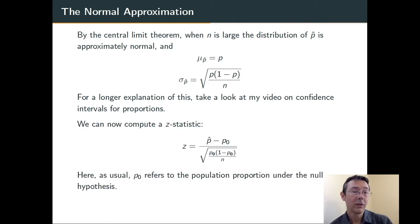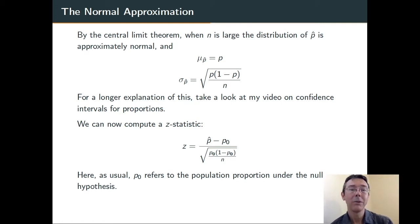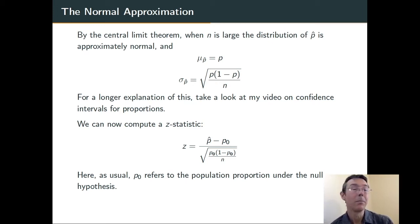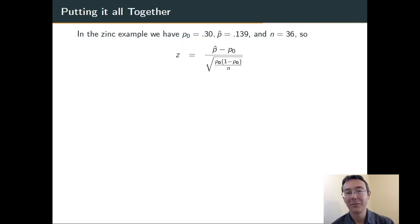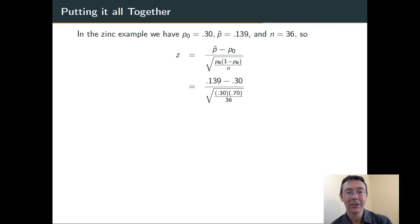So, once we know that we have a bell-shaped curve, we have a mean and a standard deviation, we can compute a z-score. We take the value we got minus the one we expected — p-hat minus p-naught — and we divide it by the standard deviation to get the z-score. Here, p-naught is referring to the population proportion assuming the null hypothesis is true. Now we just have to plug in values: p-hat is 0.139, p-naught is 0.30, n equals 36. Do a tiny bit of algebra, and we get z as negative 2.11.